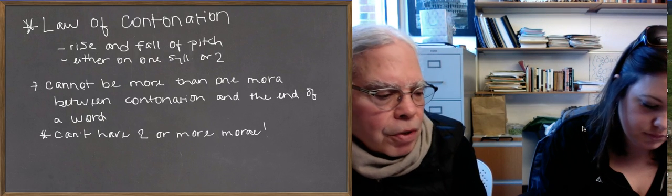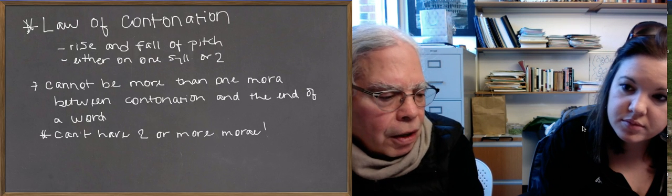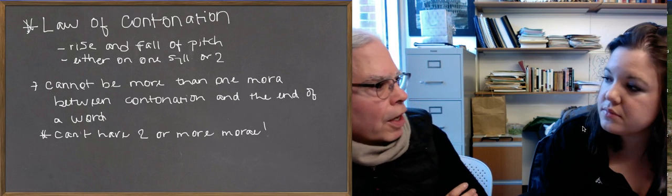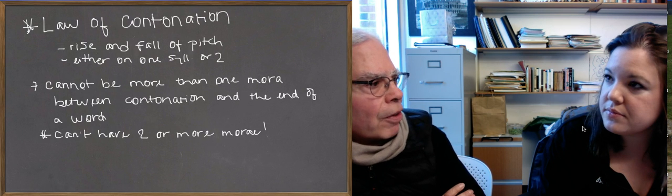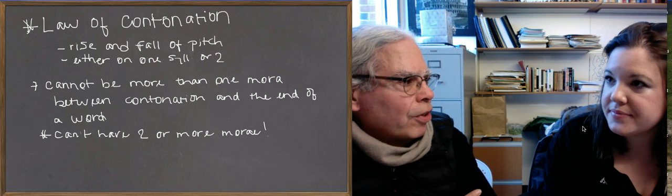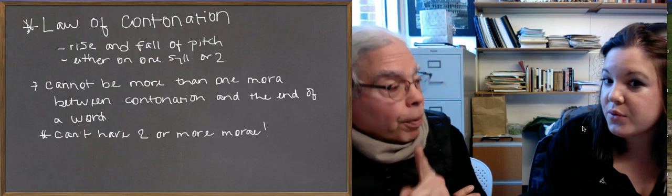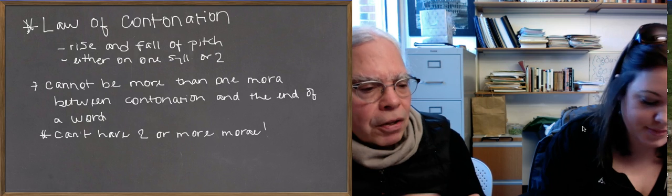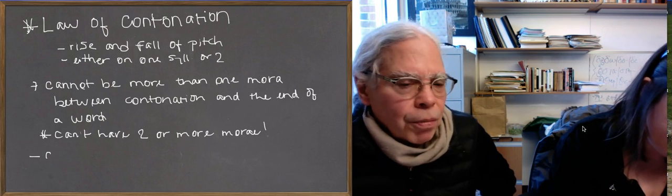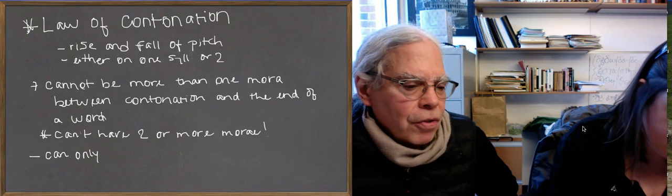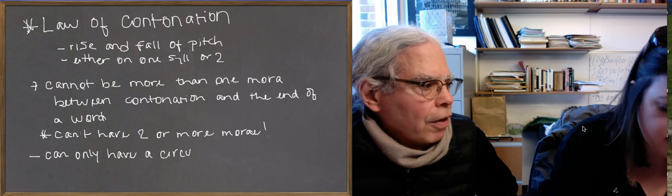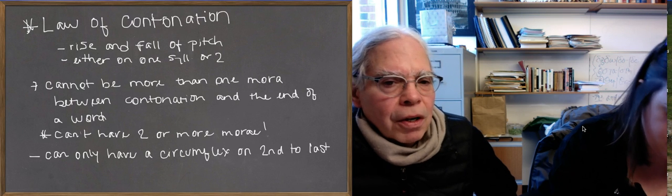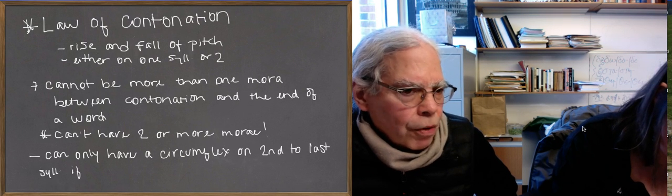If you think about circumflex accents — they can only happen on the last two syllables of a word. If a circumflex is on the last syllable, how many morae are there between it and the end of the word? None. If it's on the second-to-last syllable, there's one mora. But if there are two morae, it can't be on that syllable. It follows from the Contonation Law that you can only have a circumflex on the second-to-last syllable if the last syllable is a short one — there can't be a long vowel there, because then there would be two morae.